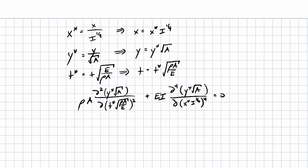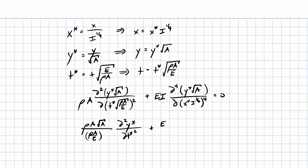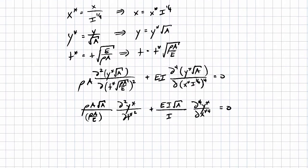So here we are so far. We'll simplify: we have rho A times the square root of A in the numerator and rho A over E in the denominator, giving d² y* over d(t*)². Plus E times I times the square root of A divided by I times d⁴ y* over d(x*)⁴ equals zero.